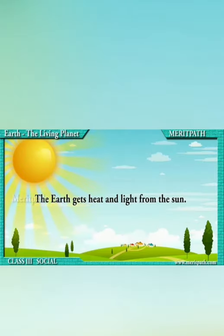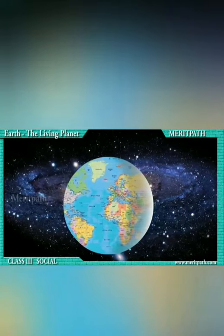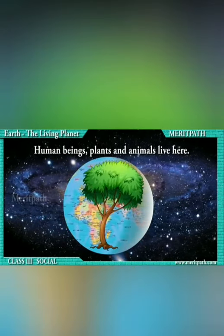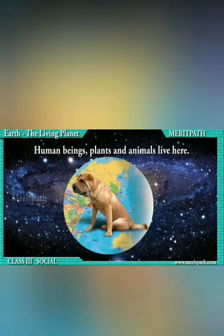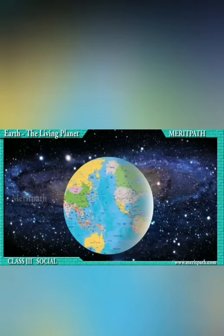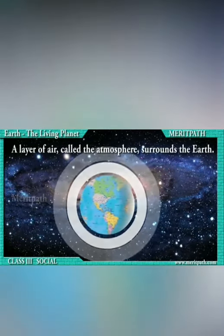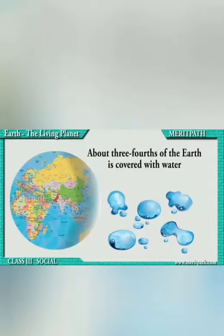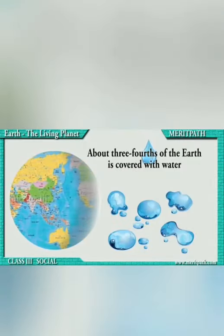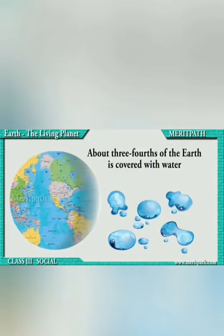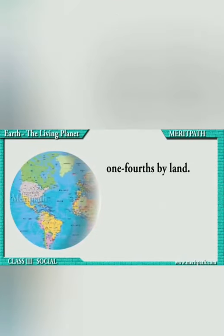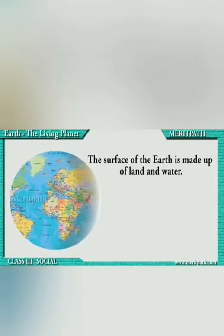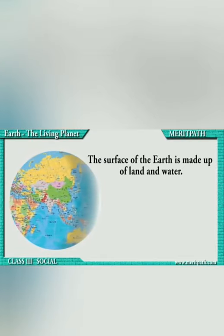Earth cannot produce heat and light of its own and depends on the sun. All living things — from human beings, plants, to animals — live on earth. Atmosphere, which is a layer of air, surrounds the earth. The surface of the earth is covered with three-fourths water and one-fourth land. So earth is made up of land and water.